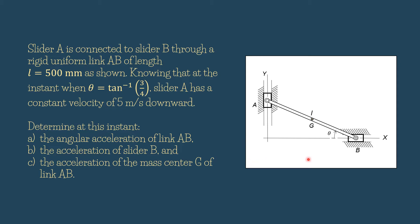This is the diagram. In the previous video, we calculated the angular velocity of link AB and the velocity at B. In this problem, we are going to find the angular acceleration of link AB and the acceleration of slider B. Slider A moves downward with a velocity of 5 meters per second. Because of this translational motion of slider A, slider B will move to the right, creating a rotational motion of link AB as well as a translational motion.